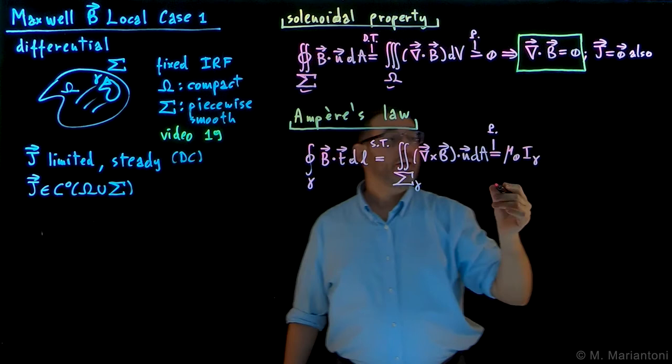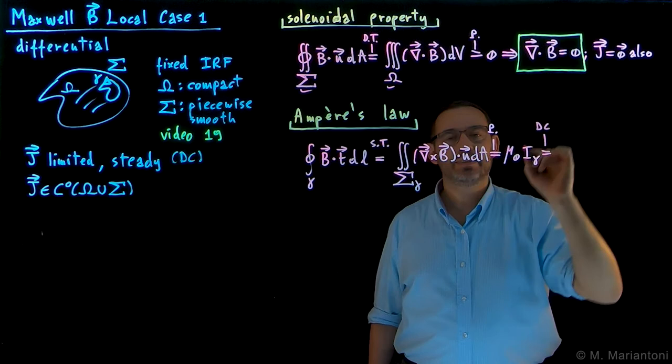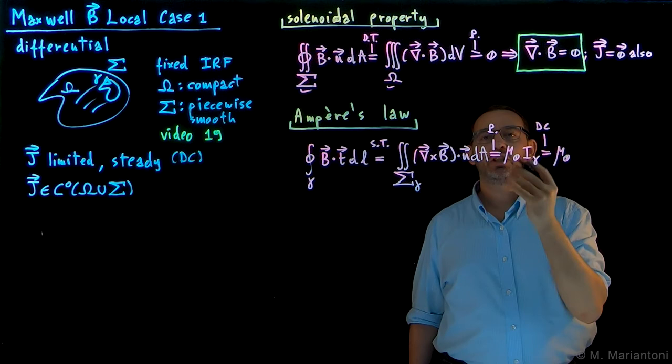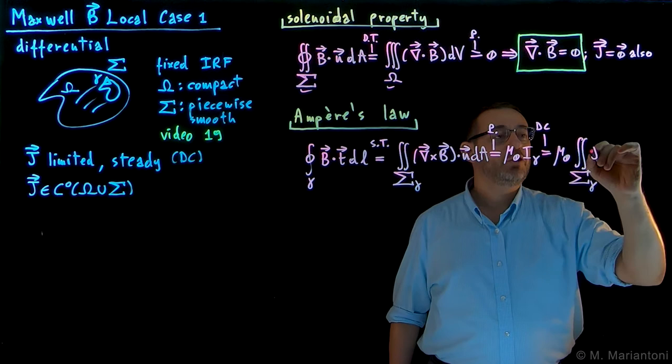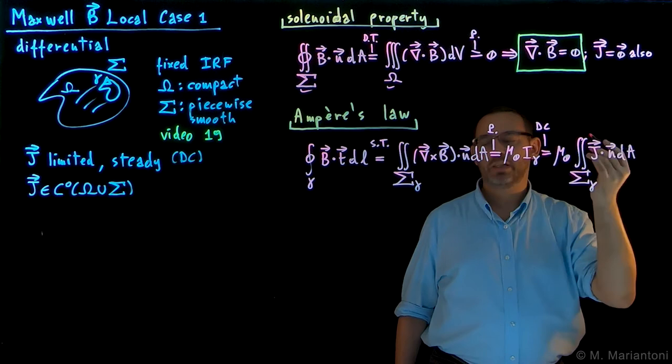Which tells us that this has to be equal to mu naught times the current I linked, this is current linked with this line gamma. Now, since we are using a DC current, let's impose this condition that the current is DC, so a steady current. In that case, this can be written as mu naught times—well, we know that the current intensity I is nothing but the flux through, in this case, the surface, open surface capital Sigma gamma, which has small gamma as a border, of J dot dA, flux of J.